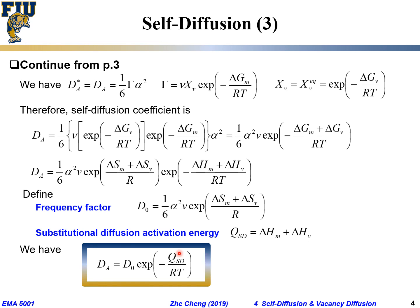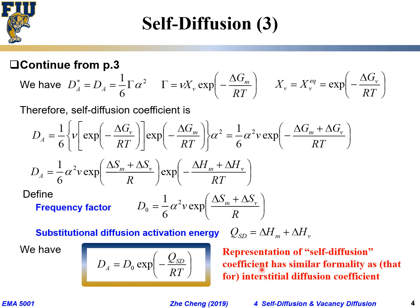We used the radioactive tracer to derive the self-diffusion coefficient, but in the end we dropped it — because it would be the same whether it's the stable isotope or the radioactive isotope. This self-diffusion coefficient has a similar formality, the same format as interstitial diffusion: a pre-exponential frequency term times an exponential term.